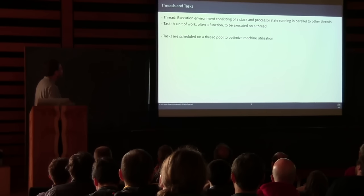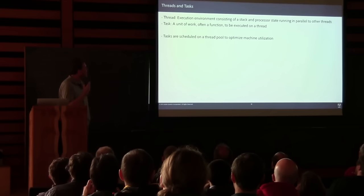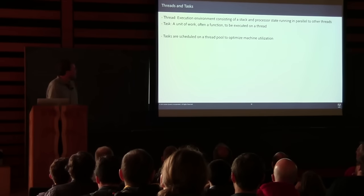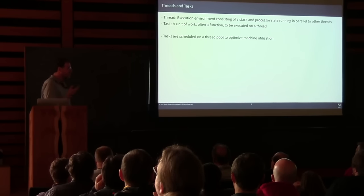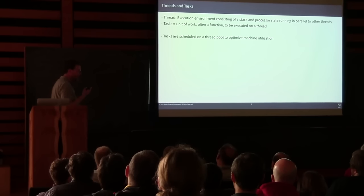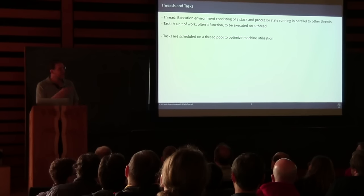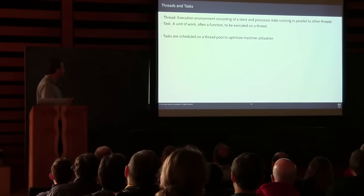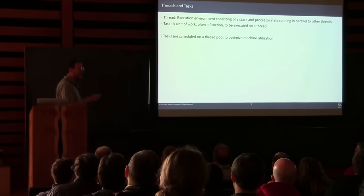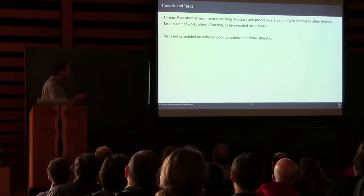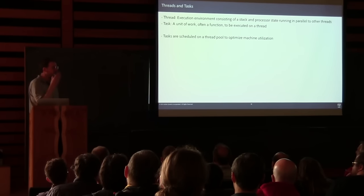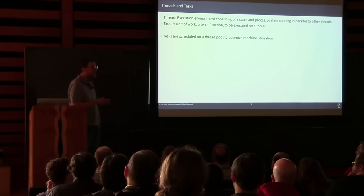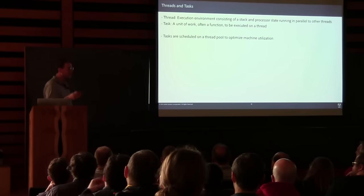Threads are an execution environment consisting of a stack and processor state running in parallel to other threads — provided by the OS, available in C++11. They can be lightweight to switch between but memory-intensive to create in large numbers. A task is a unit of work, often a function, to be executed on a thread. Frequently we schedule tasks on a thread pool — one thread per core — rather than spinning up many threads. C++11 and C++14 don't yet have a good thread pool.